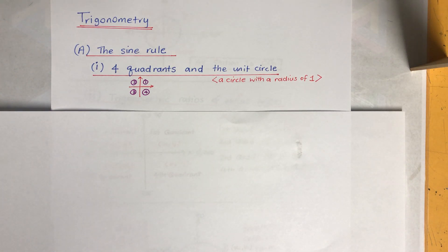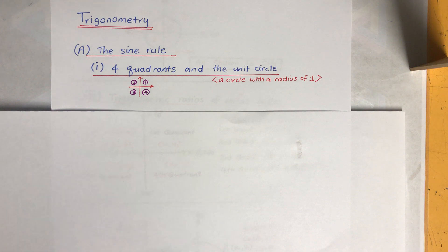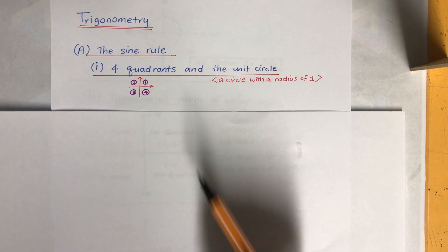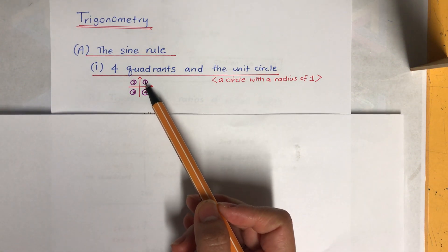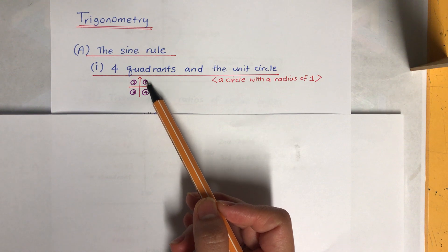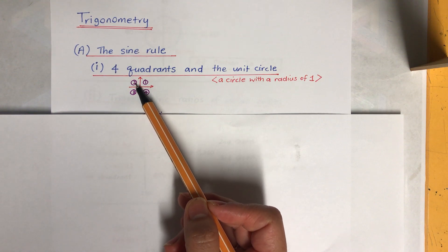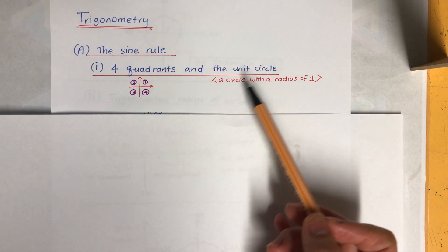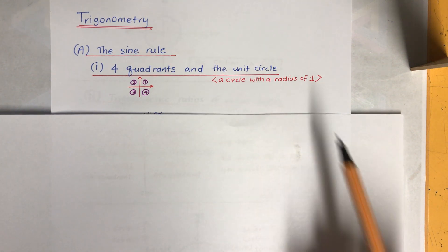Okay, trigonometry — the sine rule. But before we look at the sine rule, let's have a look at the four quadrants and the unit circle. The four quadrants use the number plane, going anti-clockwise: the first quadrant is on the right-hand side corner, then the second going anti-clockwise, then the third and the fourth. The unit circle is just a circle with a radius of one.